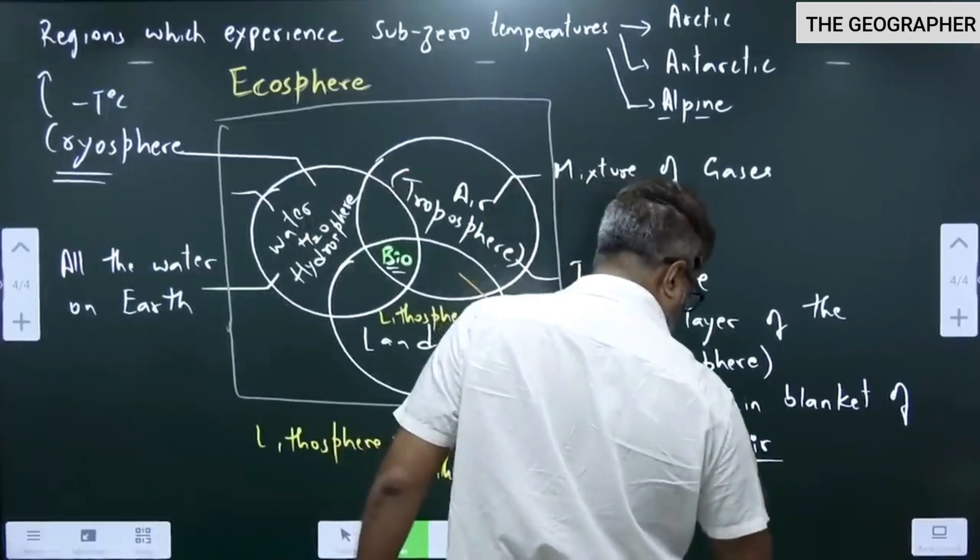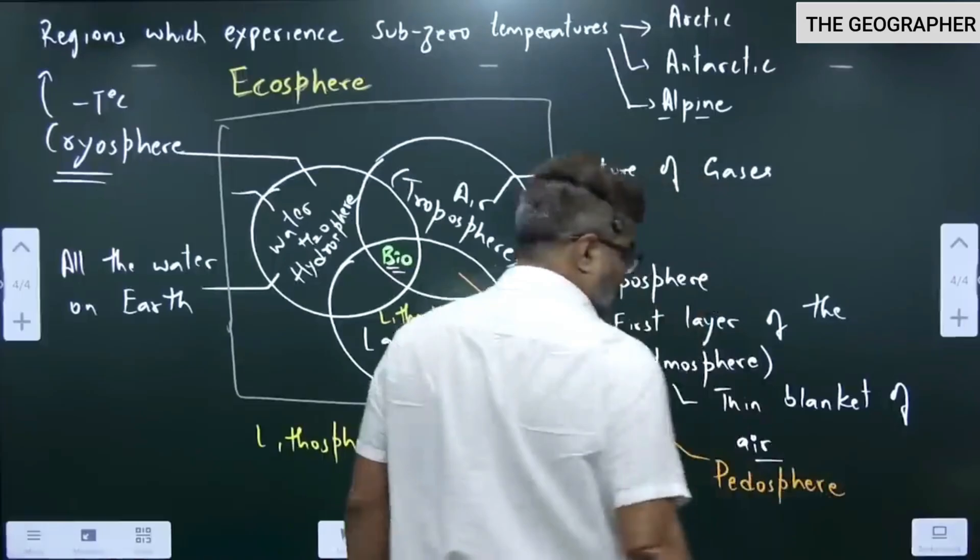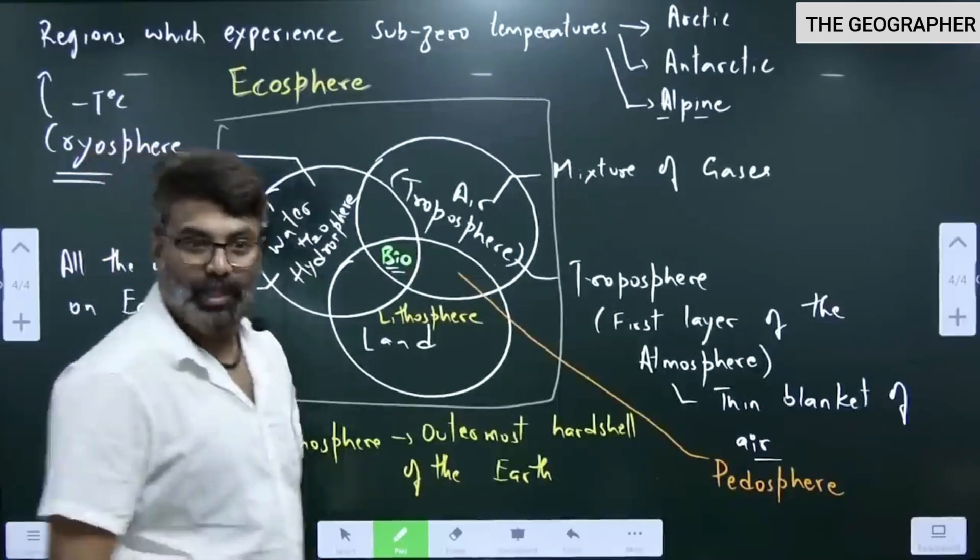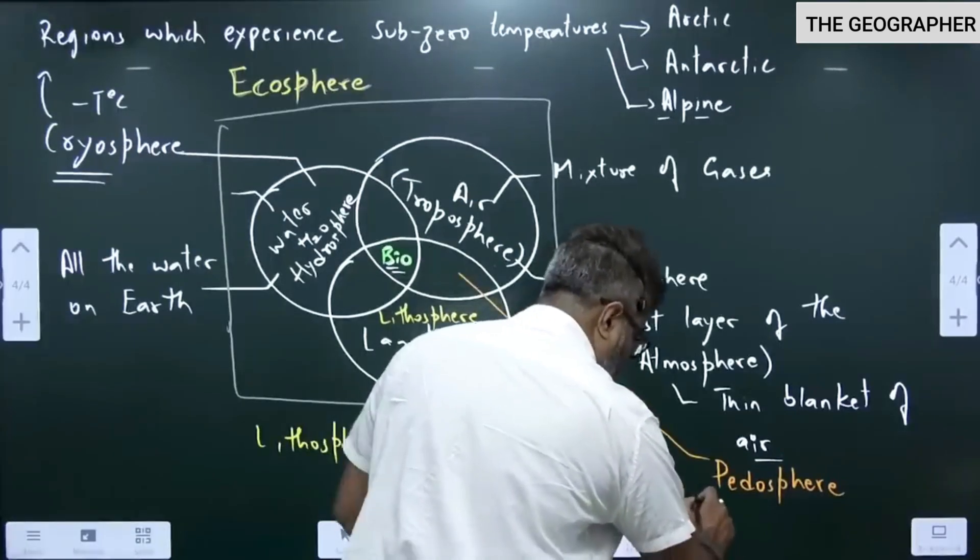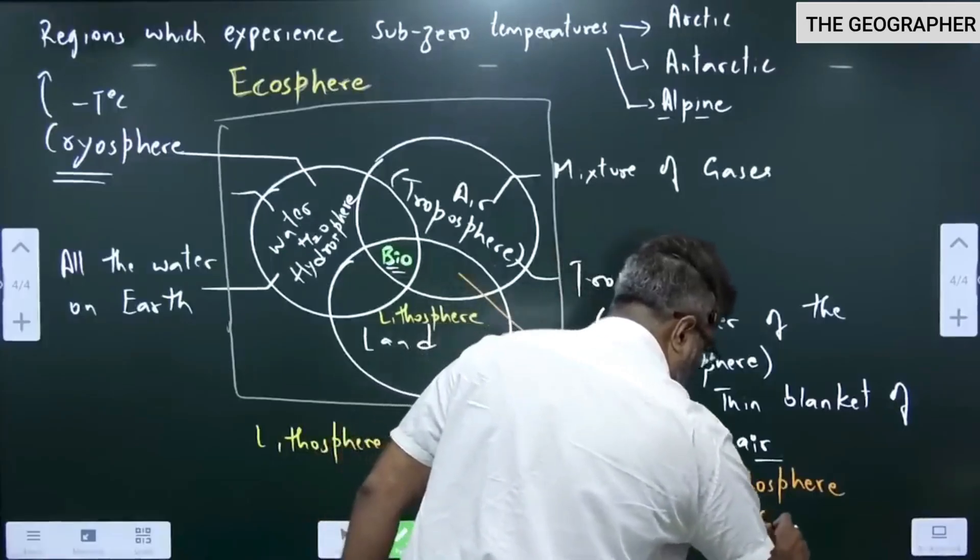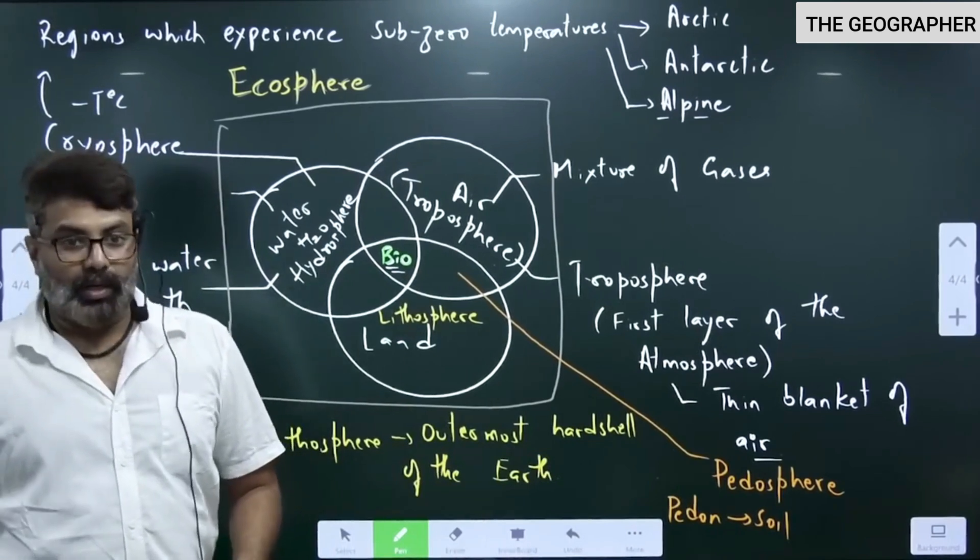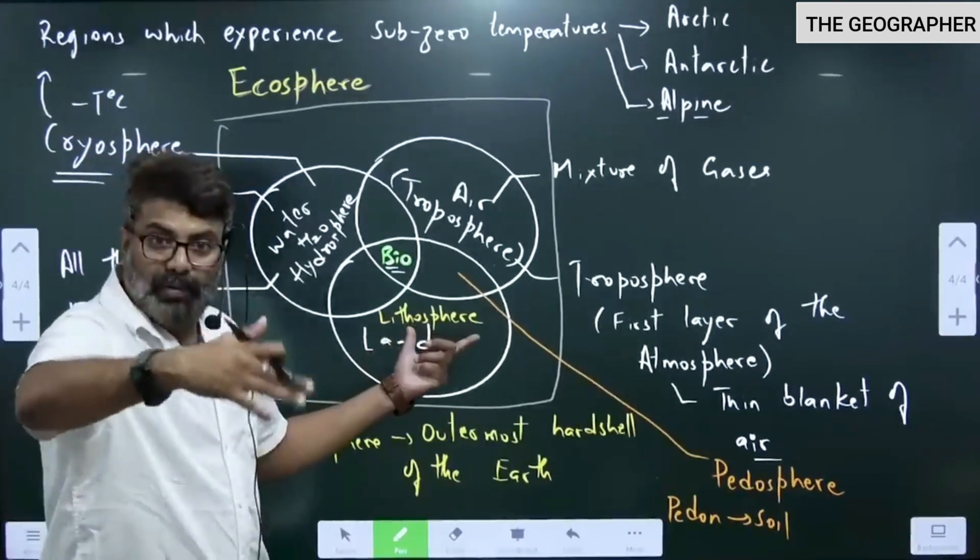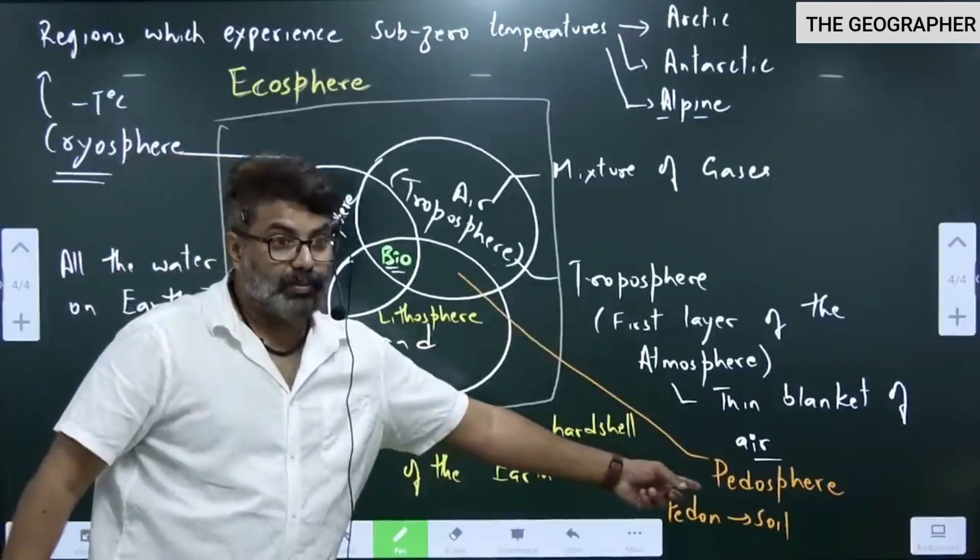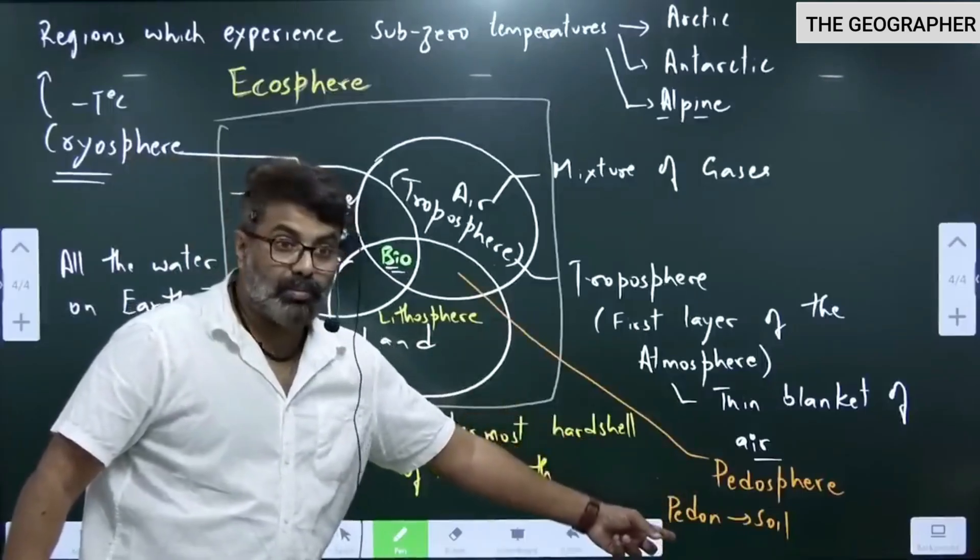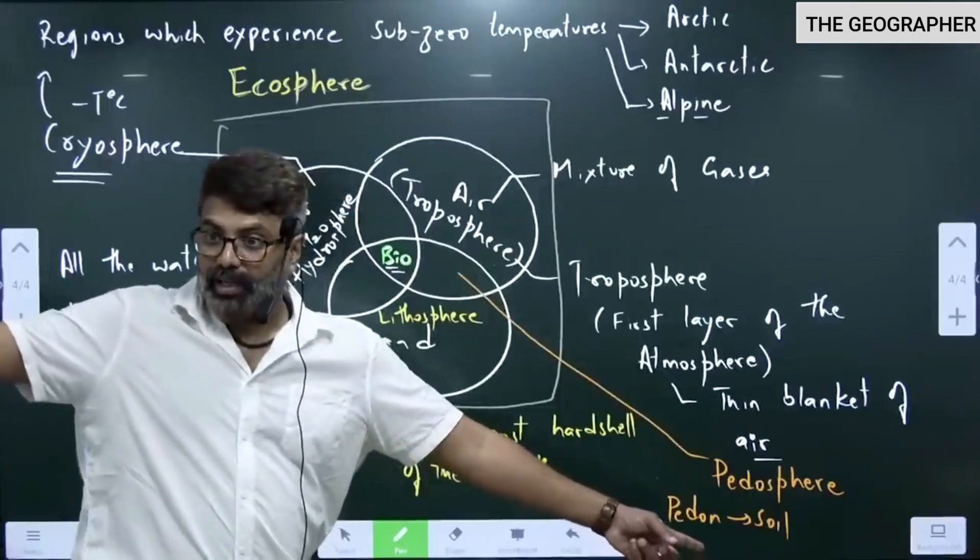I will write here - pedosphere. What is pedon means soil. The word pedon means soil. On the earth surface we have what? Soil. So part of the lithosphere, upper part of the lithosphere where we have weathered rock, where we have soil is called as pedosphere. The word pedo comes from pedon. In Greek means soil. The soil we have outside is pedon.